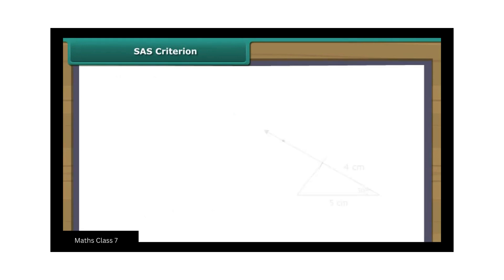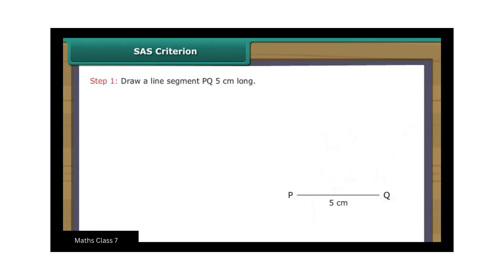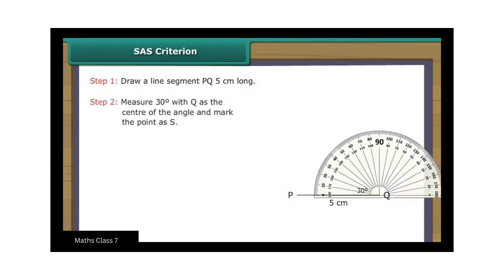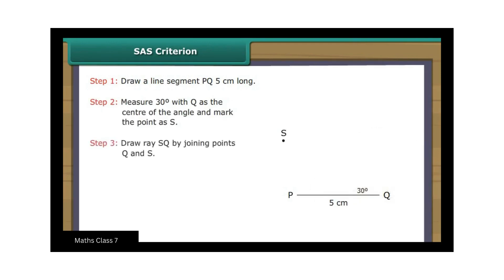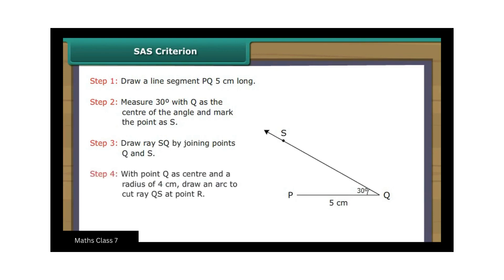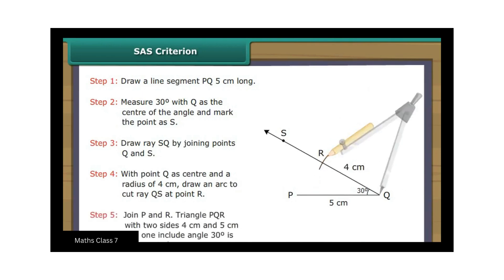SAS Criterion. Let us now draw a triangle whose two sides measure 4 cm and 5 cm and the included angle measures 30 degrees. Draw a line segment PQ 5 cm long. Measure 30 degrees with Q as the center of the angle and mark the point as S. Draw ray QS by joining points Q and S. With point Q as center and a radius of 4 cm, draw an arc to cut ray QS at point R. Join P and R. Triangle PQR with two sides 4 cm and 5 cm and one included angle of 30 degrees is constructed.